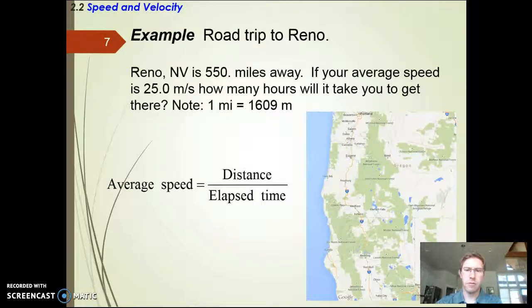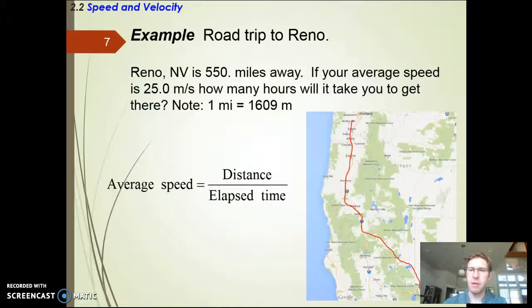Let's do a quick example with this. I was born and raised in Reno, Nevada, which is about 550 miles from Newburgh, which is where George Fox is. It's about 550 miles if I were to drive to Reno. Let's say if you add together all the stops, the times I'm going through town and the times I'm on freeway, if I took my average speed over that entire time, it's about 25 meters per second. I want you to tell me the number of hours it takes to drive from Newburgh to Reno based on that average speed. Pause the video and try to calculate it for me real quick.